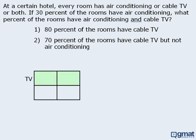Let's reserve the top row for rooms with cable TV and the bottom row for rooms without cable TV. Next, we will reserve the left-hand column for rooms with air conditioning and the right-hand column for rooms that do not have air conditioning.